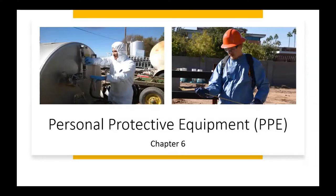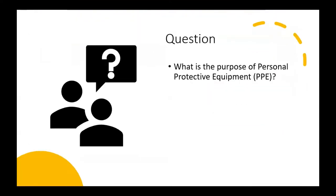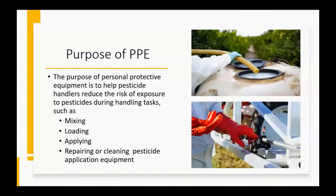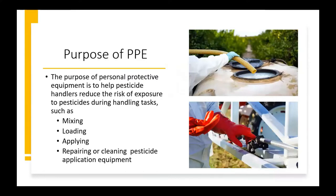We'll now focus on Personal Protective Equipment, commonly known as PPE. This presentation is based on information found in Chapter 6 of the National Pesticide Applicator Certification Core Manual. The purpose of PPE is to help pesticide handlers reduce the risk of exposure to pesticides during handling tasks, such as mixing, loading, applying, or repairing or cleaning pesticide application equipment. PPE requirements are found in the Precautionary Statements section, one of the first sections of the label.